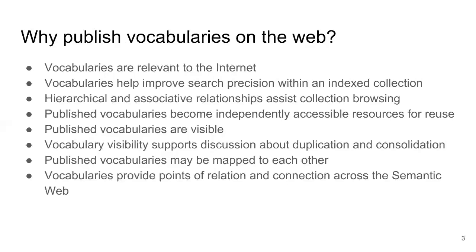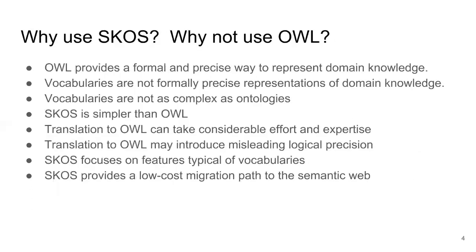If you're going to publish a vocabulary, it helps to have an agreed and supported model. Just as a vocabulary is an extension of agreement on meaning, a community standard is an expression of agreement on how a vocabulary structure will be expressed. SKOS is an example of a model which provides a simple means to enable vocabulary access and reuse on the internet, and a great strength of SKOS is its simplicity. How then should vocabularies be published? The web ontology language, otherwise known as OWL, predates SKOS. So why not use OWL?